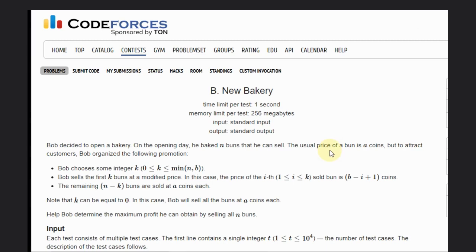Hello, welcome back to our YouTube channel. Today we are going to see the Codeforces problem: New Bakery. Bob is the person who has decided to open a bakery, but on the opening day he wants to sell at the usual price of a_i coins.